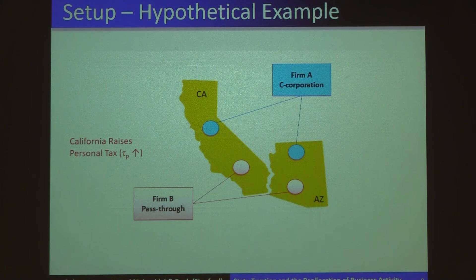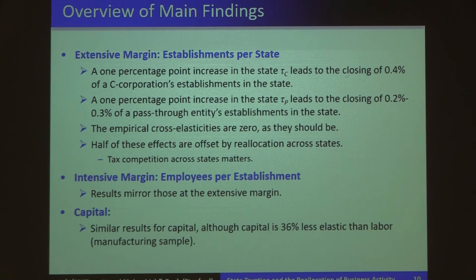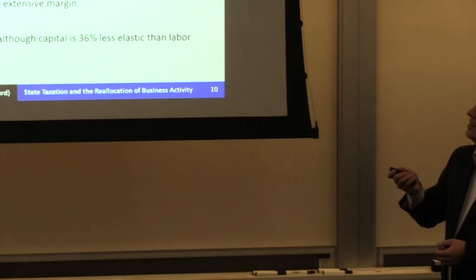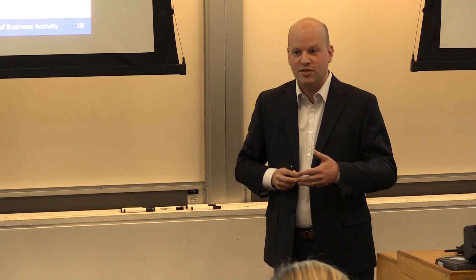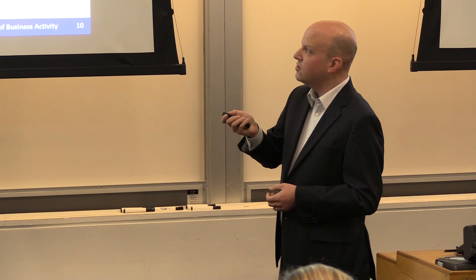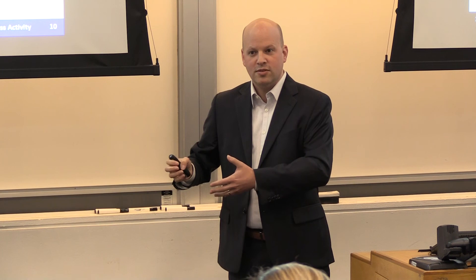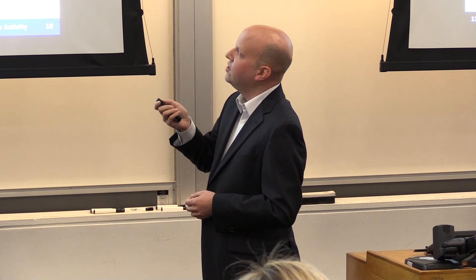We also look at what happens if California increases the personal income tax, in which case we find the reverse: some action for the pass-through entity but none for the C-Corporation. In the paper, we conduct two types of analysis. First, we look at what happens at the extensive margin — changes in the number of establishments for a given firm in a given state. Then we also look at what happens at the intensive margin — changes in the number of employees within existing establishments. So the question at the extensive margin is whether companies close down establishments, whereas at the intensive margin it is whether companies reduce employees within existing facilities.